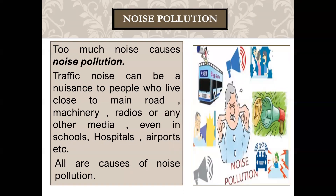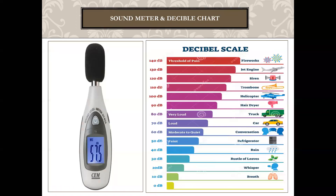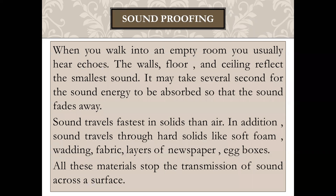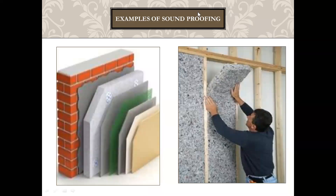The instrument to measure sound is called a sound meter — mostly digital ones are available today. The unit of sound is the decibel, denoted by small 'd' capital 'B'. We looked at a decibel chart showing different objects and their decibel values. Finally, we learned about sound proofing — which materials trap sound so it does not travel to the next room. I hope all of you have learned about this topic and the whole chapter.